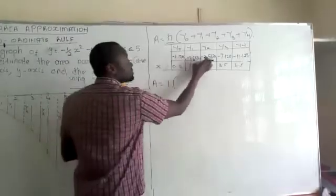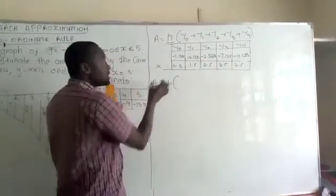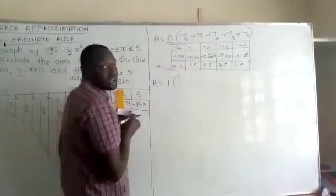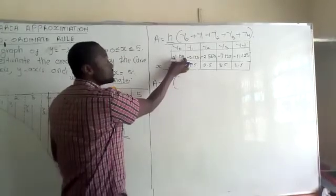So we go ahead. All these values, we can see, are negative. So in this case, we just drop the negative value and take the absolute value. So this will be 1.125 plus 2.125 plus 2.5625 plus 7.125 plus 11.125.